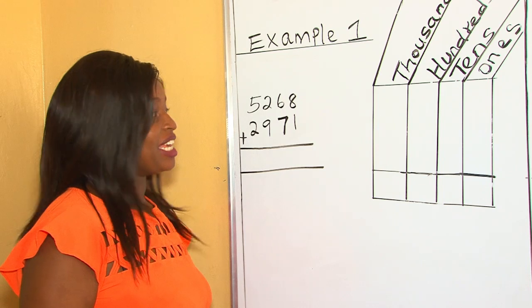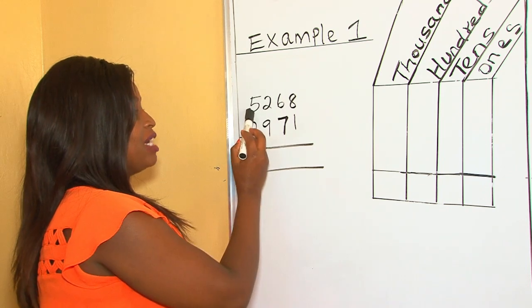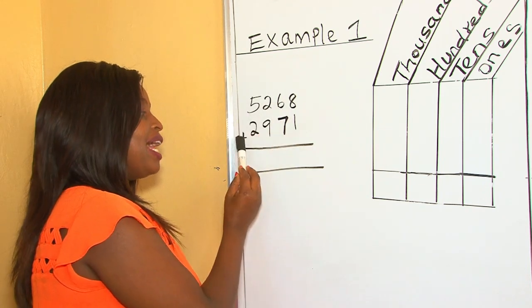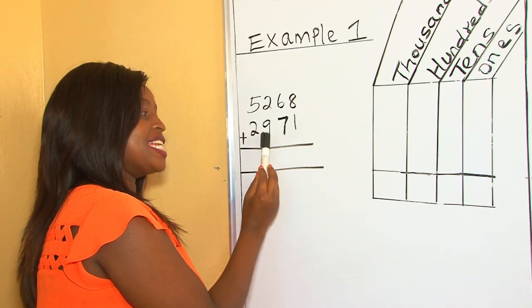For example, giving a question like 5,268 plus 2,971.